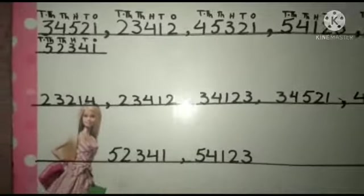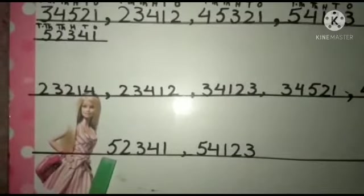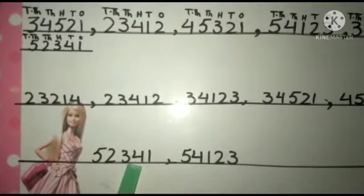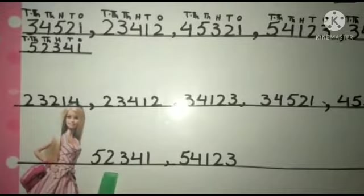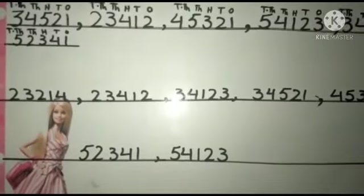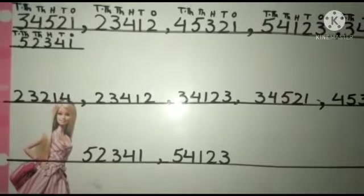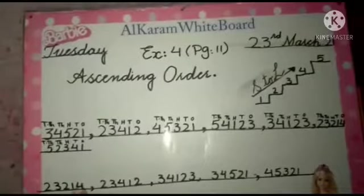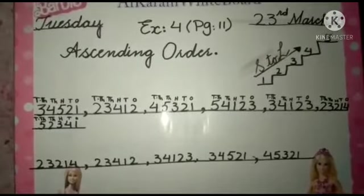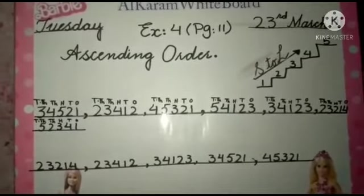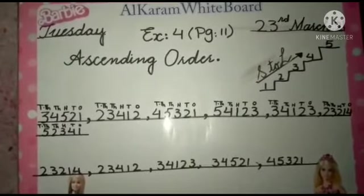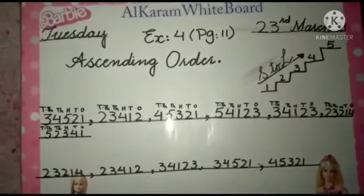So I have written 52,341 as the smaller number and 54,123 as the greater number. This was the concept of ascending order. Please solve page 11 with your lead pencil in your book. Thank you.